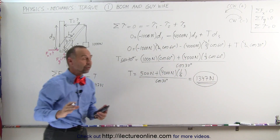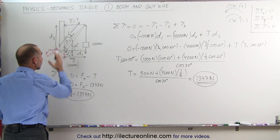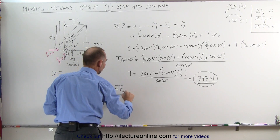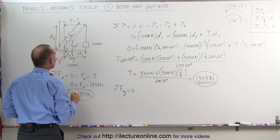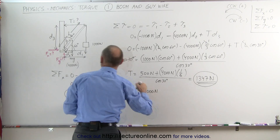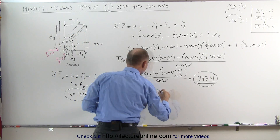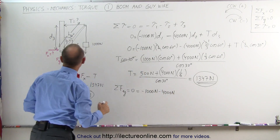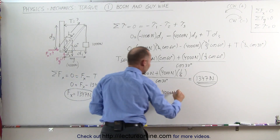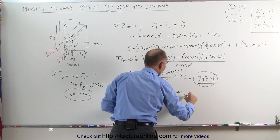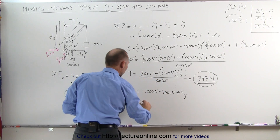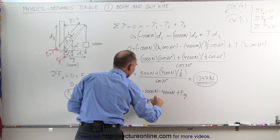Now we find the force on the boom in the y-direction. The sum of all forces in the y-direction equals zero: we have −1,000 newtons (the hanging weight), −4,000 newtons (the weight of the boom), plus Fy. This gives Fy = 5,000 newtons.